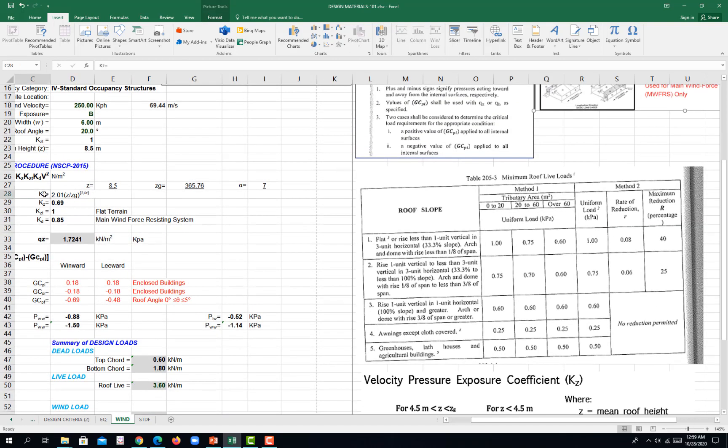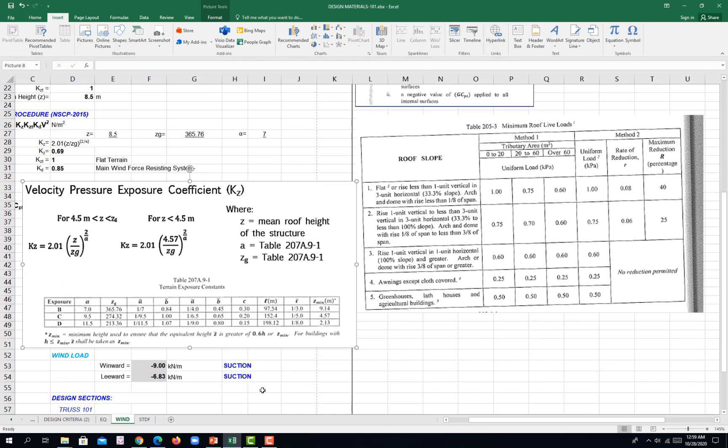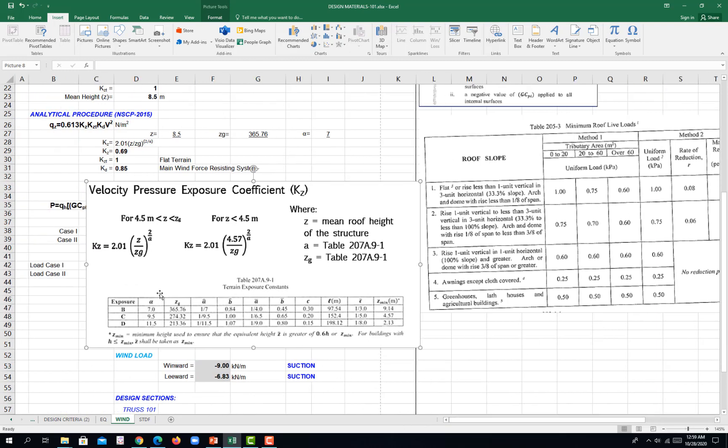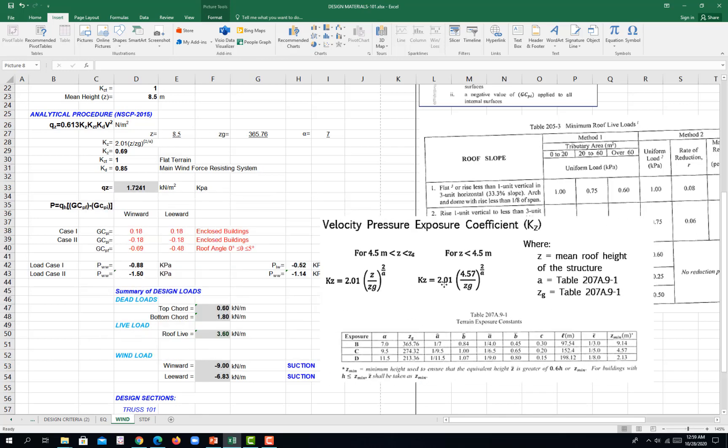And then KZ, assuming a flat terrain, that would be 1. And then the mean roof height is equivalent to 8.5. We need our data. And then applying the Analytical Procedure Method 2 of the NSCP weight calculation, we just need to define KZ, KZT, KD. These are specific values based on our site condition. You have KZ. Now under exposure B, that would be alpha being 7 and then 365.76 on table 207A.9.1.